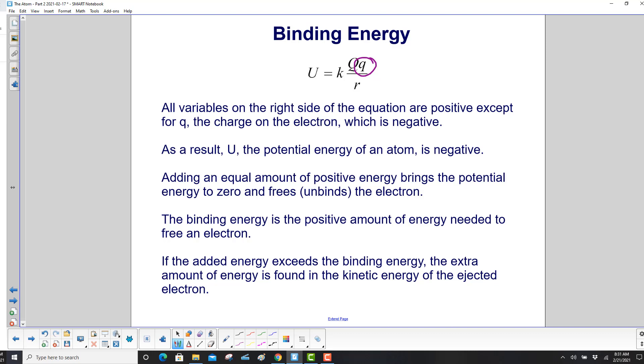Adding an equal amount of positive energy brings the potential energy to zero and frees the electron. The binding energy is the positive amount of energy needed to free an electron. If the added energy exceeds the binding energy, the extra amount of that energy is found in the kinetic energy of the ejected electron.